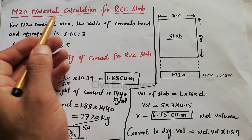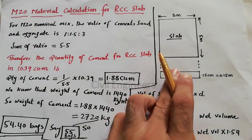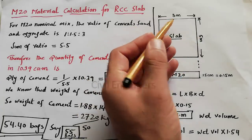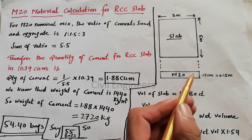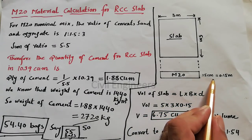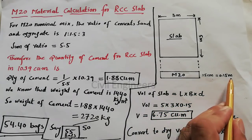M20 material calculation for RCC slab. This is an RCC slab which length is 5 meter and breadth is 3 meter, and thickness of the slab for M20 grade concrete is 15 centimeter, which becomes 0.15 meter.